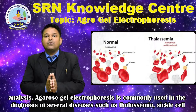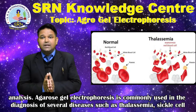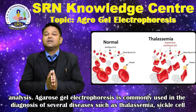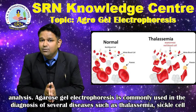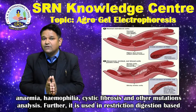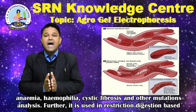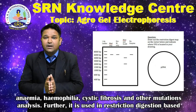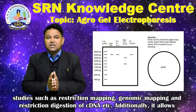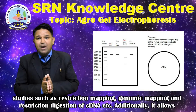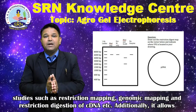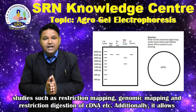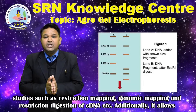Agarose gel electrophoresis is commonly used in the diagnosis of several diseases such as thalassemia, sickle cell anemia, hemophilia, cystic fibrosis, and other mutation analyses. Further, it is used in restriction digestion-based studies such as restriction mapping, genomic mapping, and restriction digestion of complementary DNA.